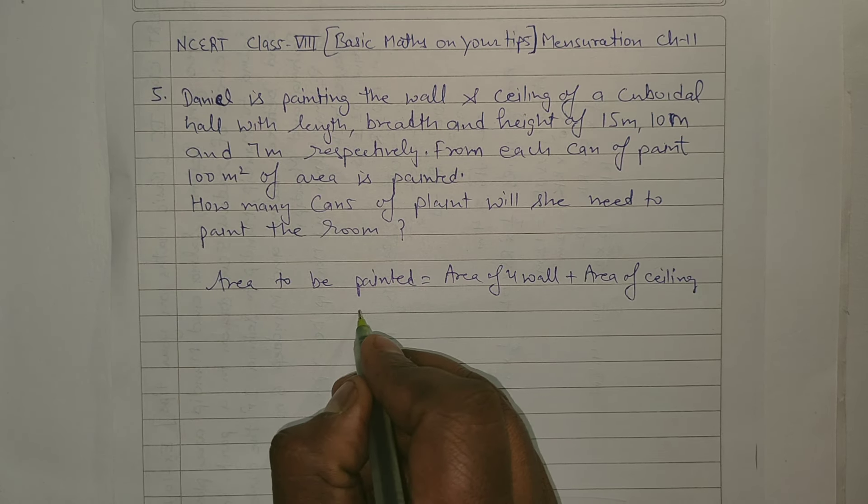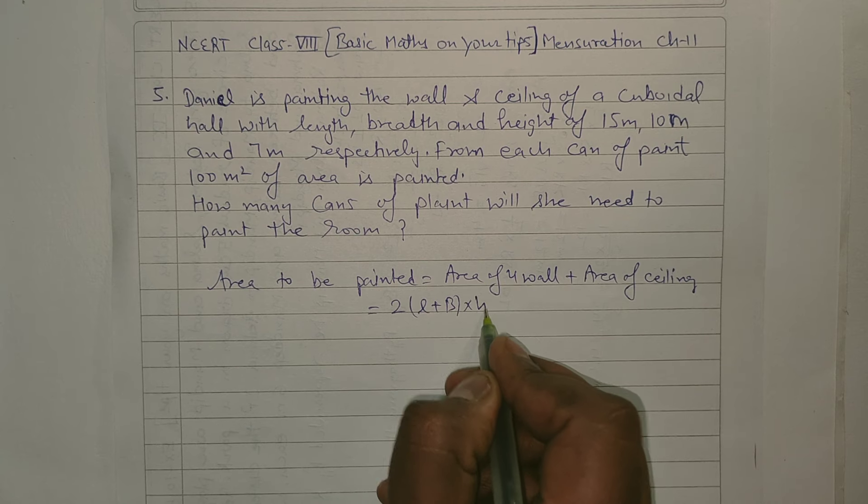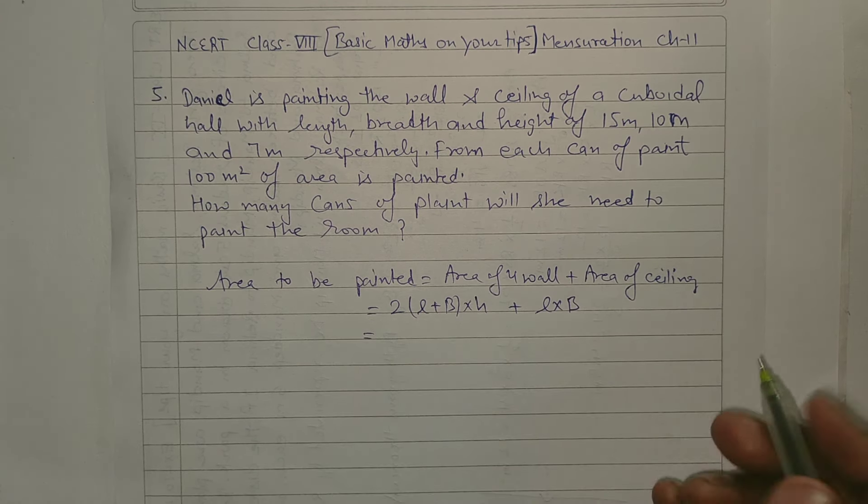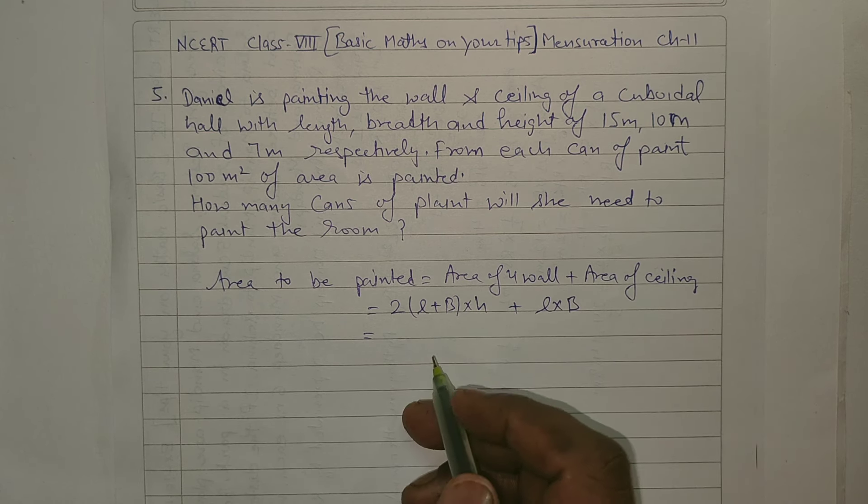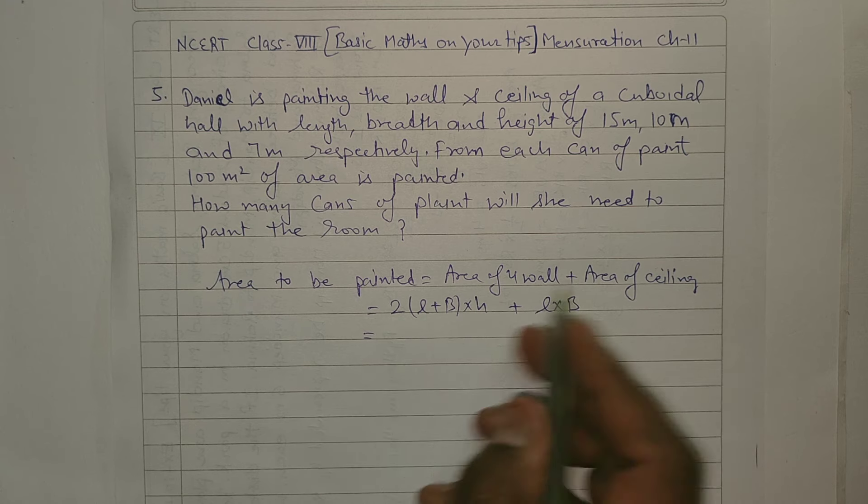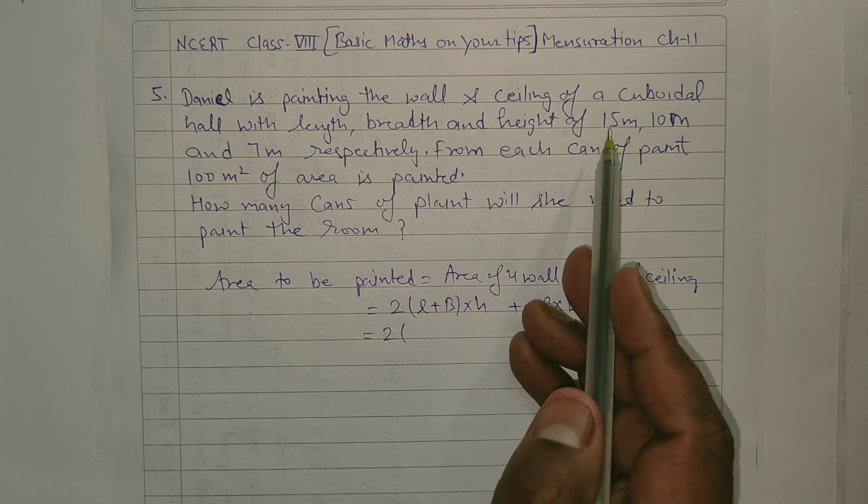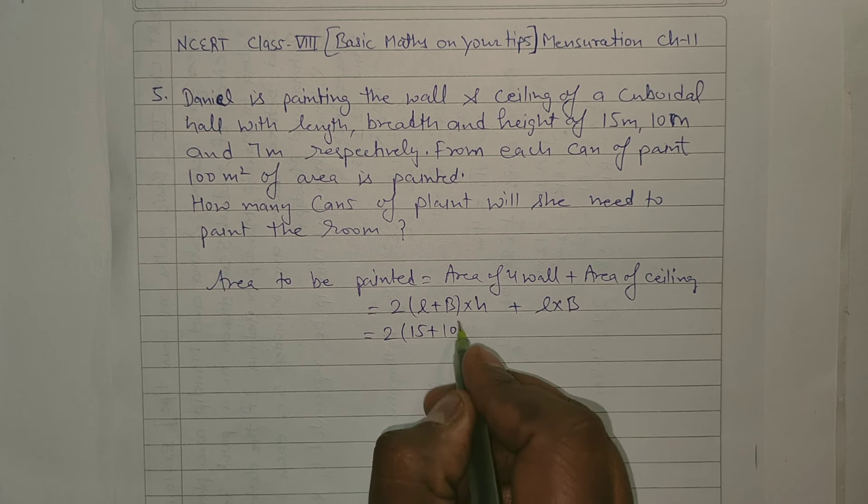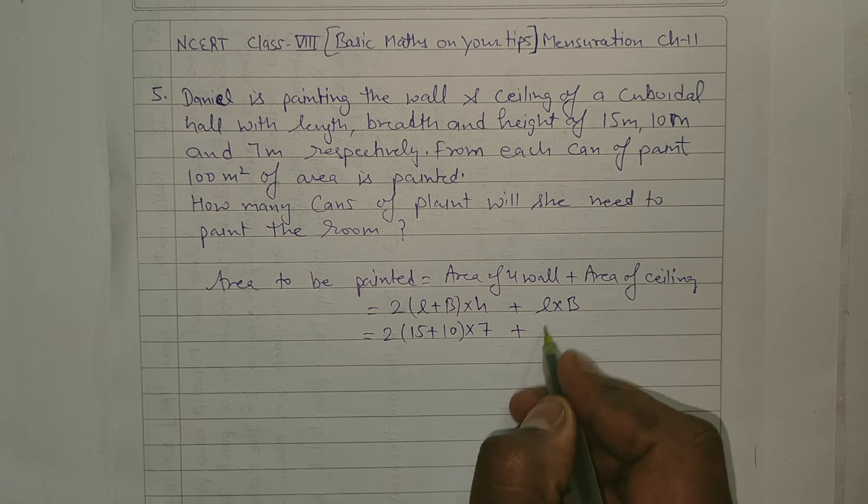Area of four walls is 2(L plus B) into H. Area of ceiling is L into B. Ceiling is rectangular shape.